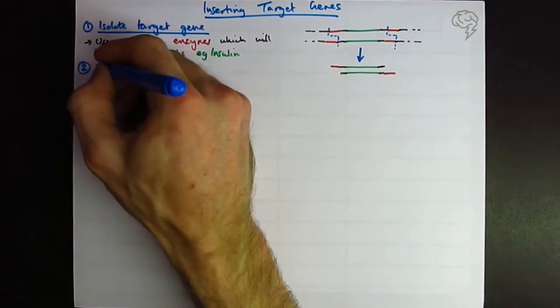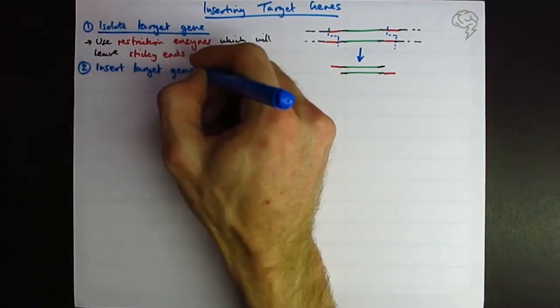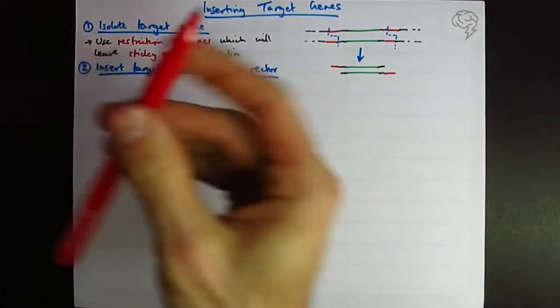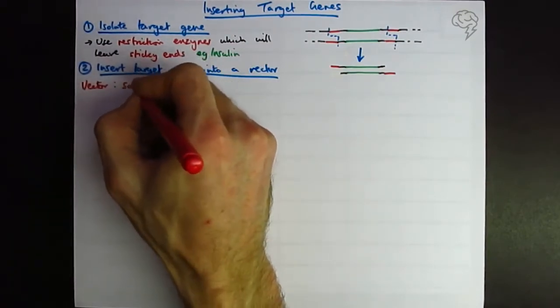We want to insert the target gene into a vector. Well, a vector is something that moves DNA from one place to another.